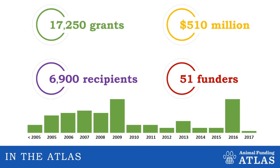The green columns you see on the bottom represent rough volume of grants by year. You'll see some concentration in the early years where we ported over grants from the database created by the Summerleaf Foundation. The original Summerleaf database ended in 2009, so the grants from 2005 to 2009 include all 51 funders, but grants after 2009 only include the four funders who created the Animal Funding Atlas. We are still working to add more grants for recent years and hope to have your participation.